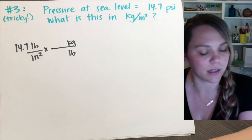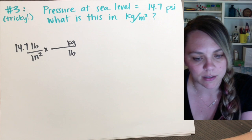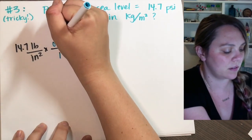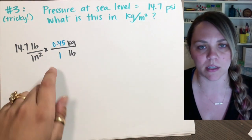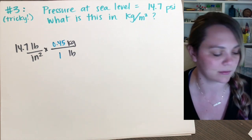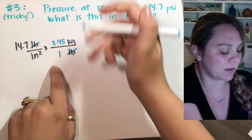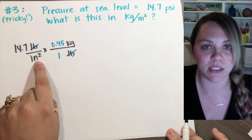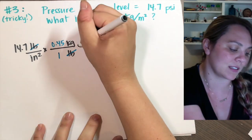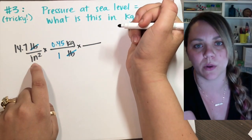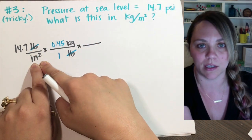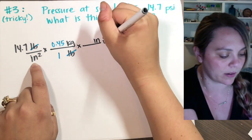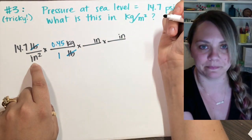My conversion for that is: one pound is 0.45 kilograms. Hopefully you won't have to memorize these — they should be given to you on a table. So now pound and pound cancel and I'm in kilograms. At least I have my numerator set. Now I need to convert out of inch squared. If I want inch squared to cancel away — right now inch is on the denominator — in order to cancel that out, I've got to put inch up top on the numerator, and I've got to do it twice because it's squared.